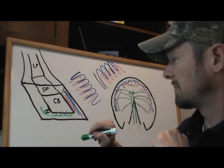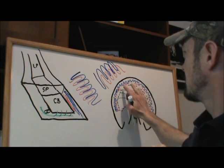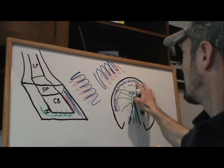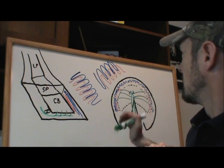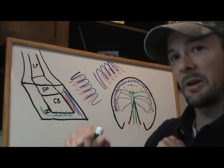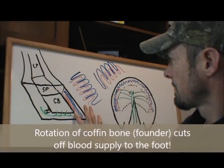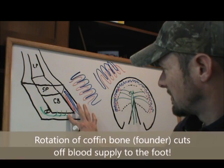everything that that part of the artery was feeding is now lost, which in turn overloads what may be compromised lamina anyway, but it for sure overloads it regardless, which then allows the bone to rotate more,